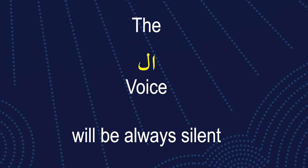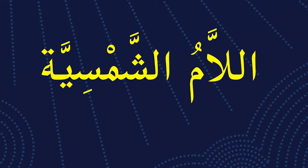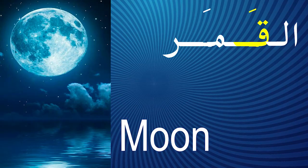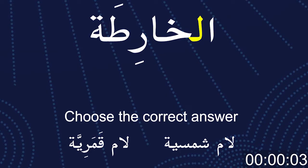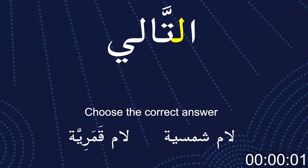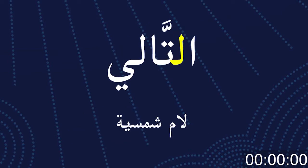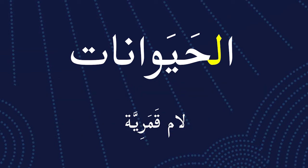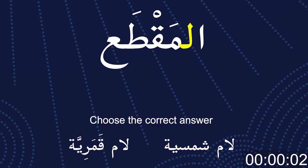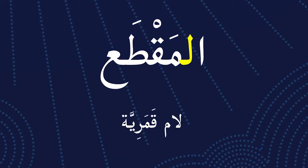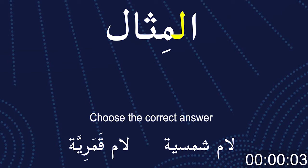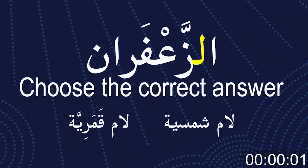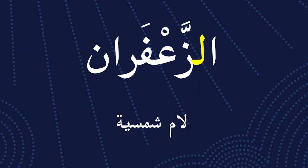The 'lam' voice will always be silent with al-shamsiya. Let's make this quiz: choose the correct answer — which word has al-lamu al-shamsiya, like al-shams, and which has al-lamu al-qamariya, like al-qamar? Al-qariba — lamu al-qamariya. Al-tali — lamu al-shamsiya. Al-hayawanat — lamu al-qamariya. Al-makta — lamu al-qamariya. Al-mithal — lamu al-qamariya. Al-zafaraan — lamu al-shamsiya.